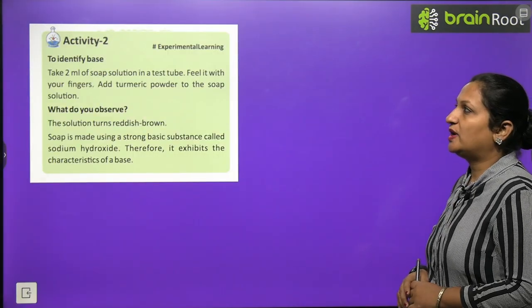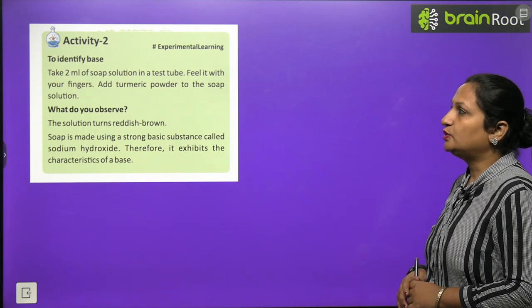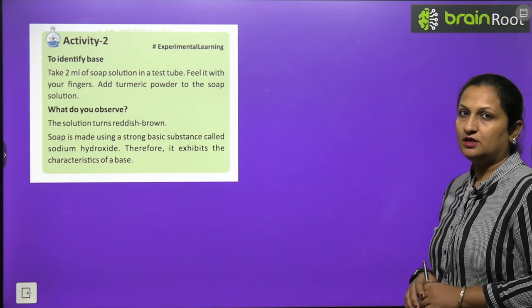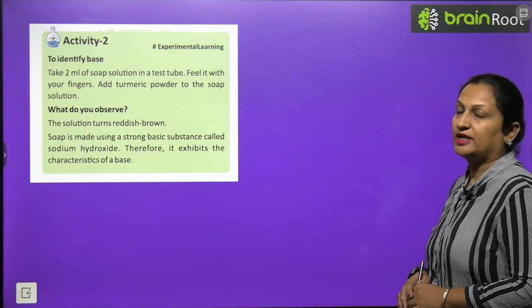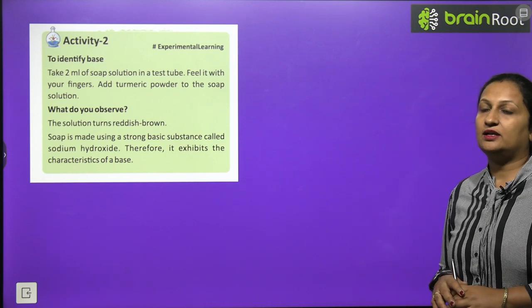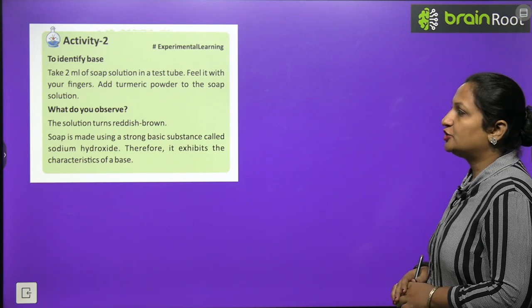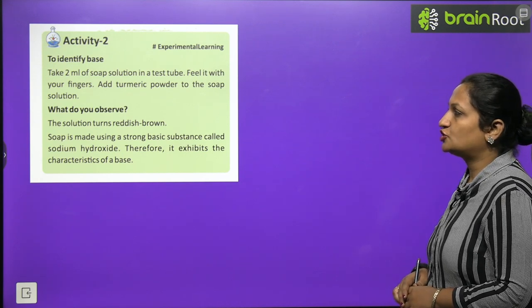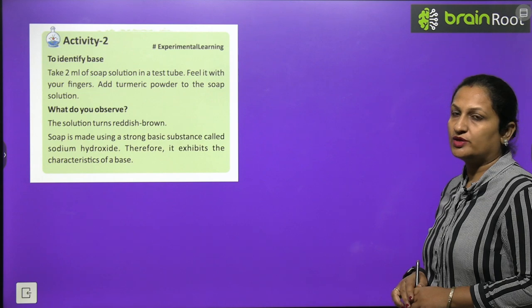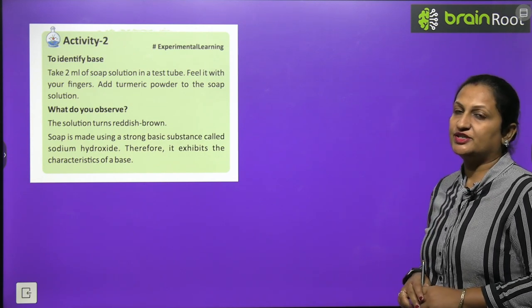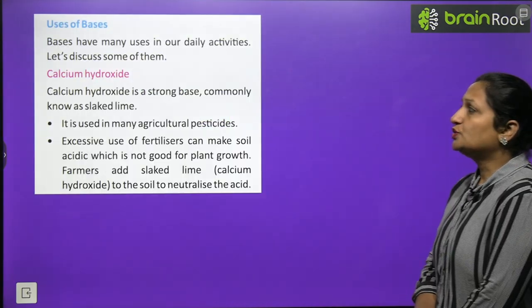Properties of bases: they are bitter in taste, slippery or soapy to touch, turn red litmus blue. What did we see in acids? They turn blue litmus red; bases turn red litmus blue. They react with acid to produce salt and water. Not all bases are soluble in water. Bases that are soluble in water are called alkalies, like sodium hydroxide, potassium hydroxide. Bases that are insoluble in water are not alkali. Therefore, all alkalies are bases, but all bases are not alkalies. Activity 2: to identify a base, take 2 ml of soap solution in a test tube. Feel it with your finger. Add turmeric powder. The solution turns reddish brown. Soap is made using a strong basic substance called sodium hydroxide. Therefore, it exhibits the characteristics of a base.